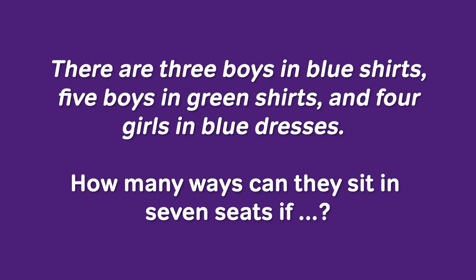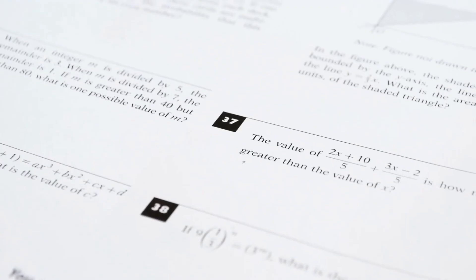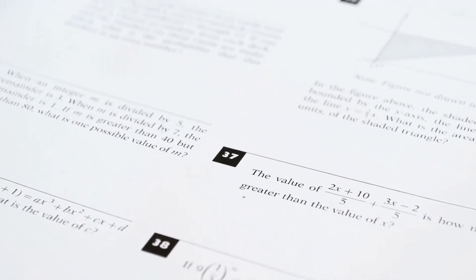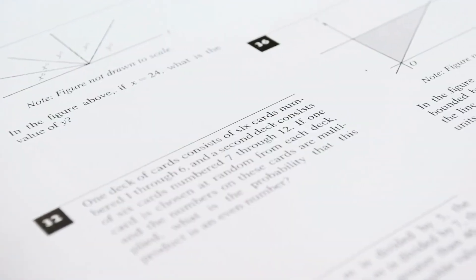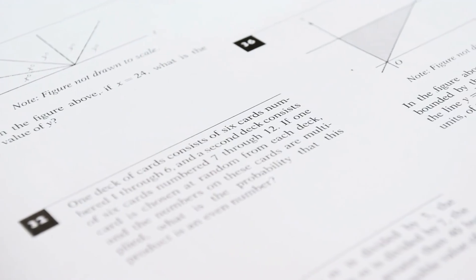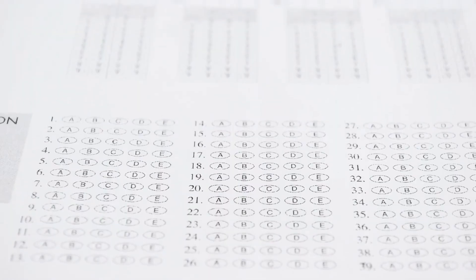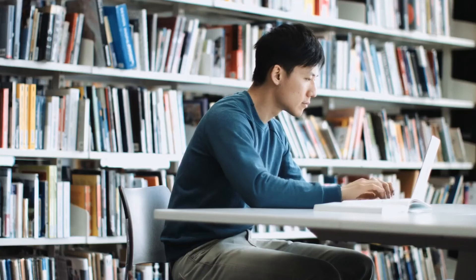Counting on the GMAT means problems like: there are three boys in blue shirts, five boys in green shirts, and four girls in blue dresses — how many ways can they sit in seven seats? Those types of arrangements, sets, and combinations are what the GMAT will have you count. Also remember the trick of inclusive counting, which the GMAT loves to test.